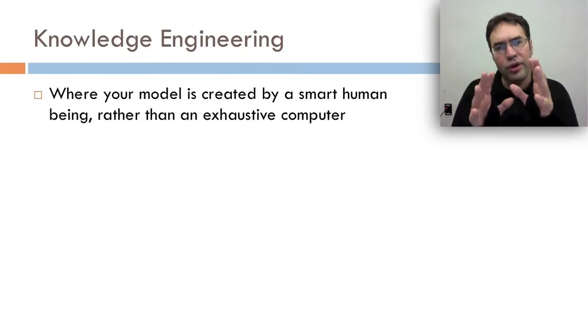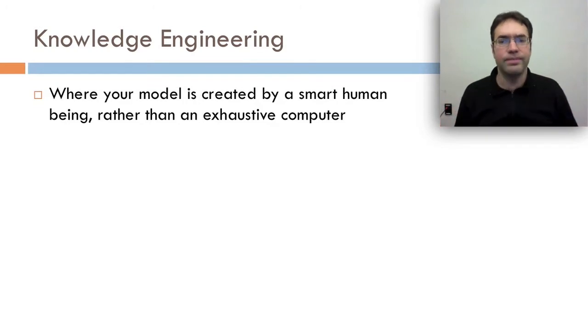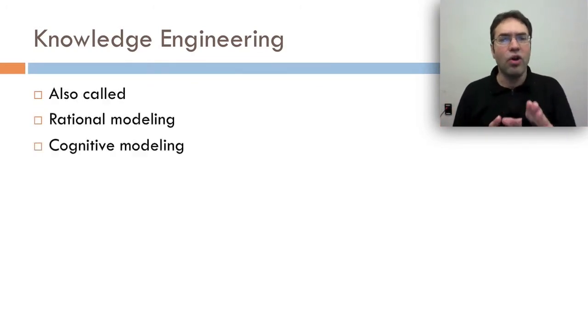Knowledge engineering is where your model is created by a smart human being, rather than a computer that just exhaustively searches through all the possibilities. It's also called rational modeling or cognitive modeling.